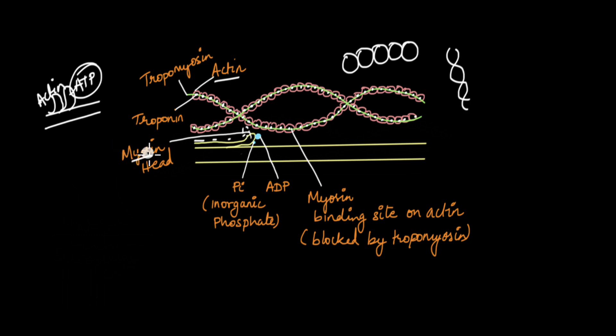Like how myosin has an actin binding site, actin has a myosin binding site. It makes sense, right? Because if actin and myosin need to bind to each other, they must have each other's binding sites. But when the muscle is relaxed, when it is not contracting, the myosin binding sites on actin are not visible, are not exposed to myosin.